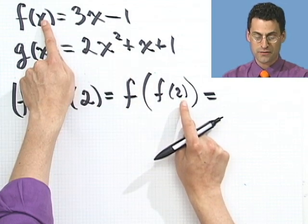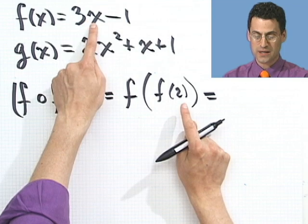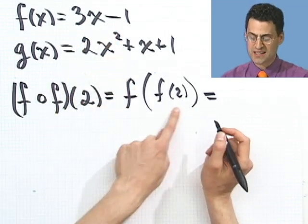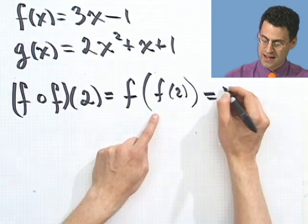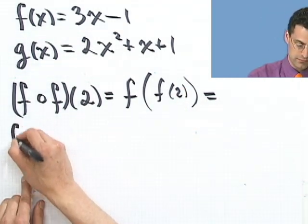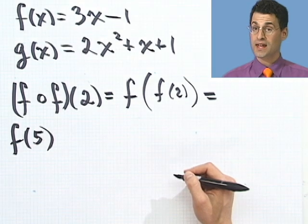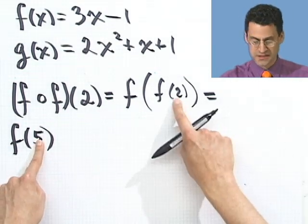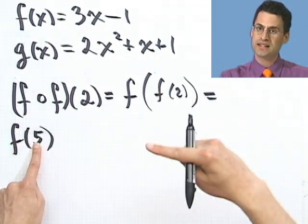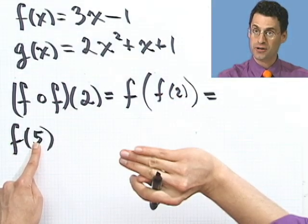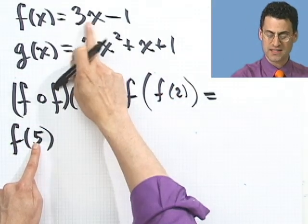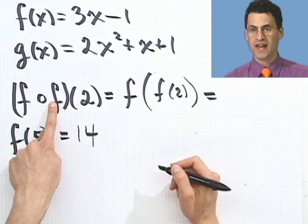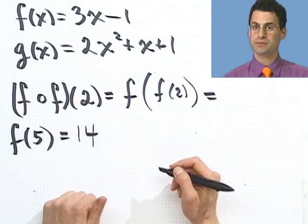So I take 2 and plug it in for x and f, and I see 3 times 2, which is 6, minus 1 is 5. So this inside thing there is 5. So I have f of 5. And what's f of 5? Well, now I take this, which was the output for this, and put it back into f. You see how I'm taking output and putting it in as input? I put that in here, I see 15 minus 1 equals 14.